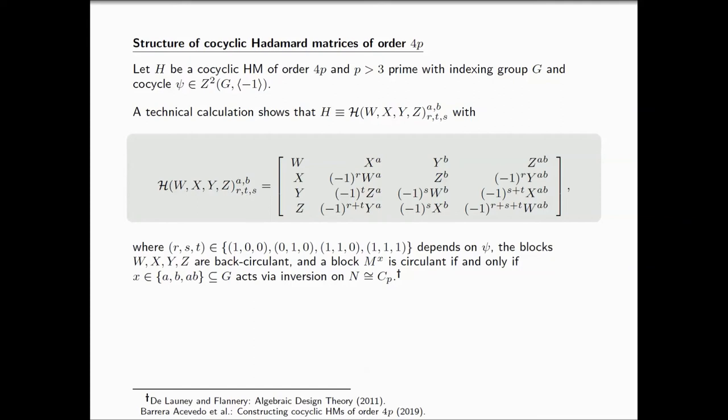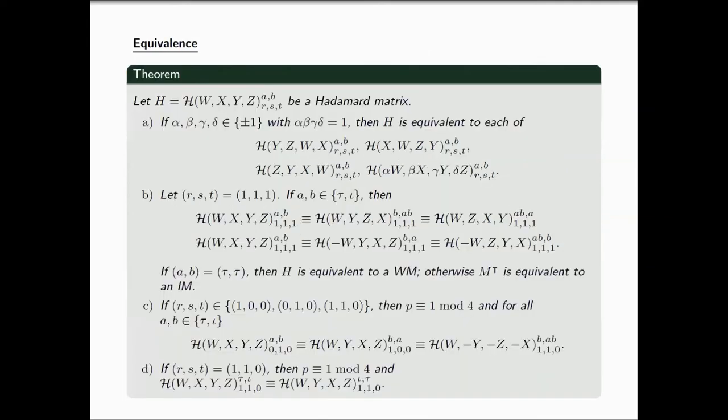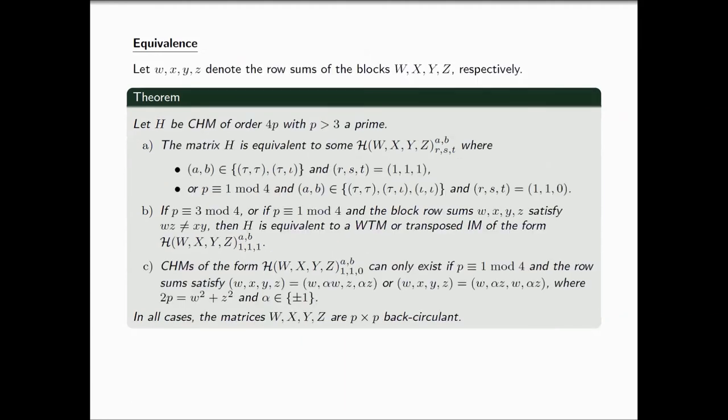There are a large number of equivalences. I'm not really going to ask you to read this slide, but there is a large number of equivalences happening here amongst all these possibilities. So we really filtered through all of these. In addition with some number theory results, we can narrow it to the following. We're going to consider W, X, Y, and Z to be the row sums of the blocks W, X, Y, and Z respectively.